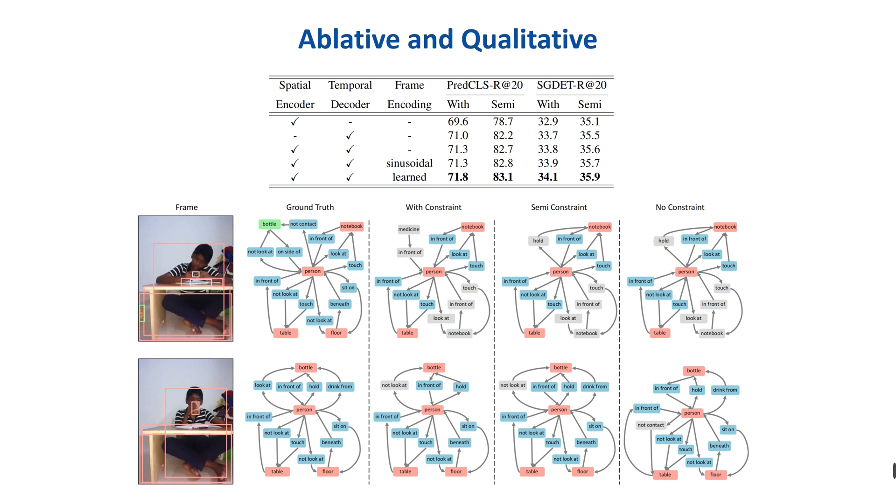When the spatial encoder and temporal decoder are both activated, STTran achieves the best performance with the learned frame encoding. And here are the qualitative results for the dynamic scene graph generation.